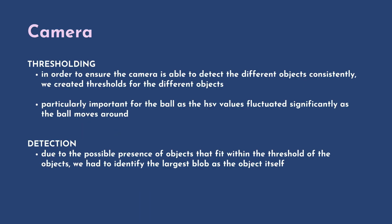Moving on to our camera. First, in order to ensure that the camera is able to detect the ball and goal consistently at different positions, we created threshold values for each of the objects. This was particularly important for the ball as the HSV values fluctuated significantly as the ball moved around the field. Next, we have detection. Due to the possible presence of other objects that fall within the threshold of our goal or ball, we chose to identify the largest blob to ensure that we are actually tracking the goal and ball and not some random objects.